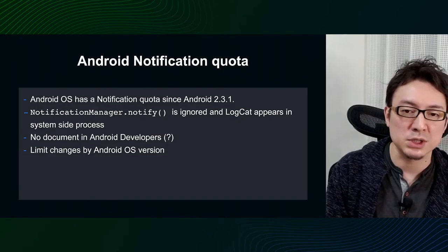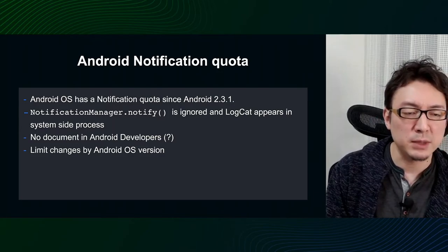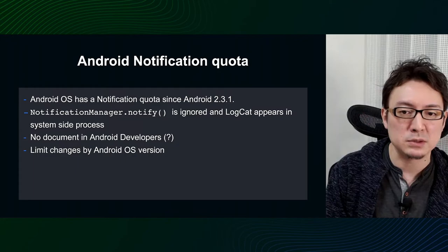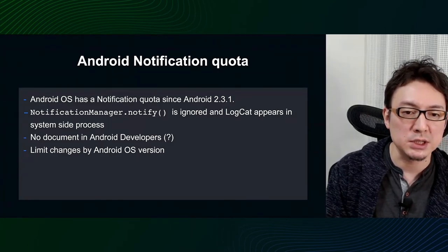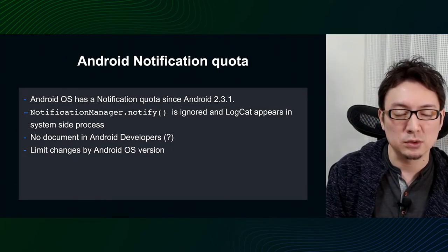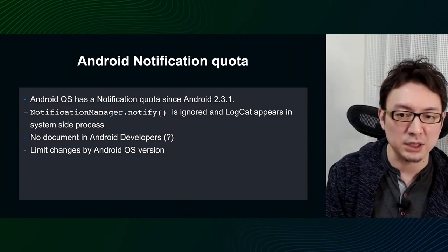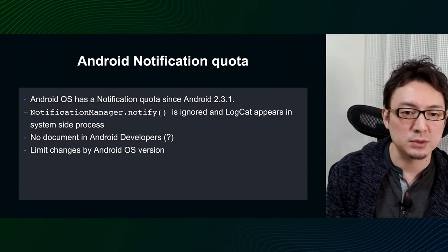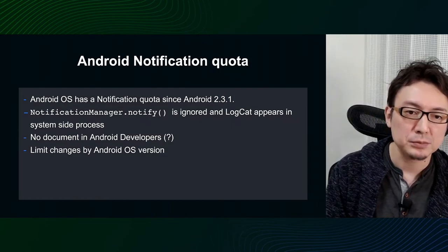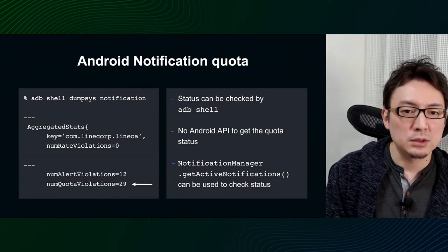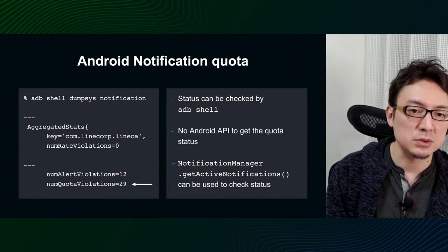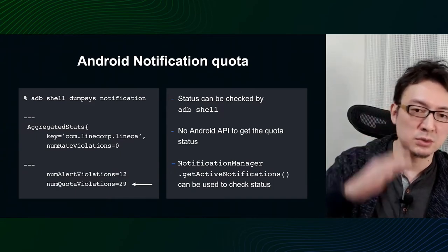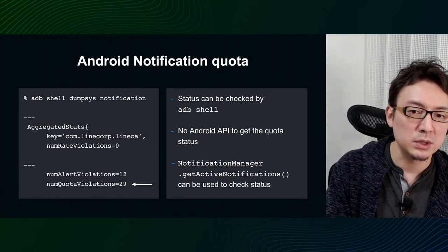Please note that when you are debugging in Android Studio, you may often filter out logs other than the application process. As far as I could find, there are some English technical forum pages, but I couldn't find any official Android developer pages describing this function. As for the upper limit, it was initially 50 in Android 2.3.1, then changed to 25 from Android 10, then to 50 again from revision 18 in the middle of Android 11, and the latest AOSP for Android 12 is 50. If you have an Android device, you can use an ADB shell command to check if your device is affected by this quota — NUM_QUOTA_VIOLATIONS can be found by running dumpsys notification. This example shows that a total of 29 notifications were not displayed due to quota violations.